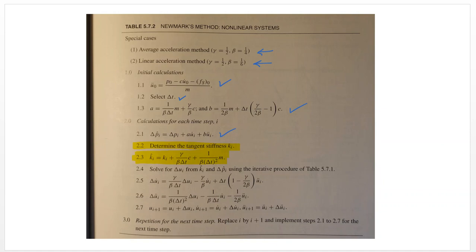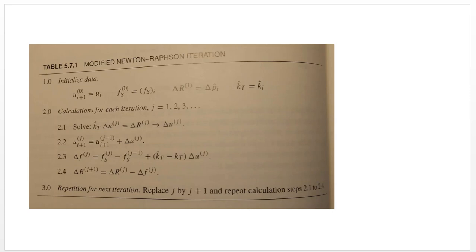Once you have that, you go into the iterative procedure, which as you can see here, involves a couple of steps that can be a little confusing at first. But once you get the hang of it, it's pretty straightforward. You're going to compute the incremental displacement using your tangent K hat.